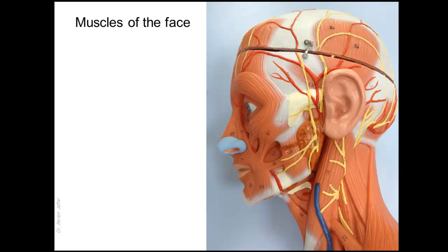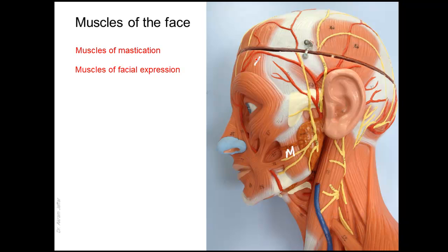There are two groups of muscles on the face. Muscles of mastication, like the masseter muscle, are supplied by the trigeminal nerve — specifically the mandibular division of the trigeminal nerve, which is the only division that carries motor fibers. The other group of muscles are the muscles of facial expression, which we are mainly concerned with today. These muscles have their motor innervation from the facial nerve, which is the seventh cranial nerve.